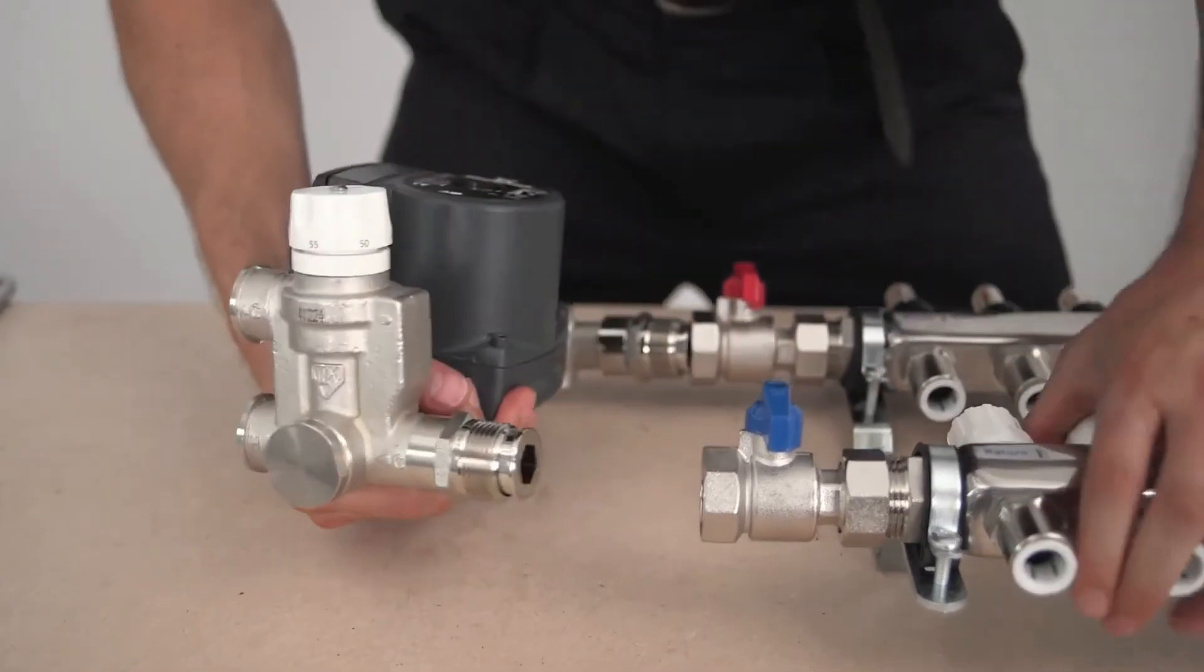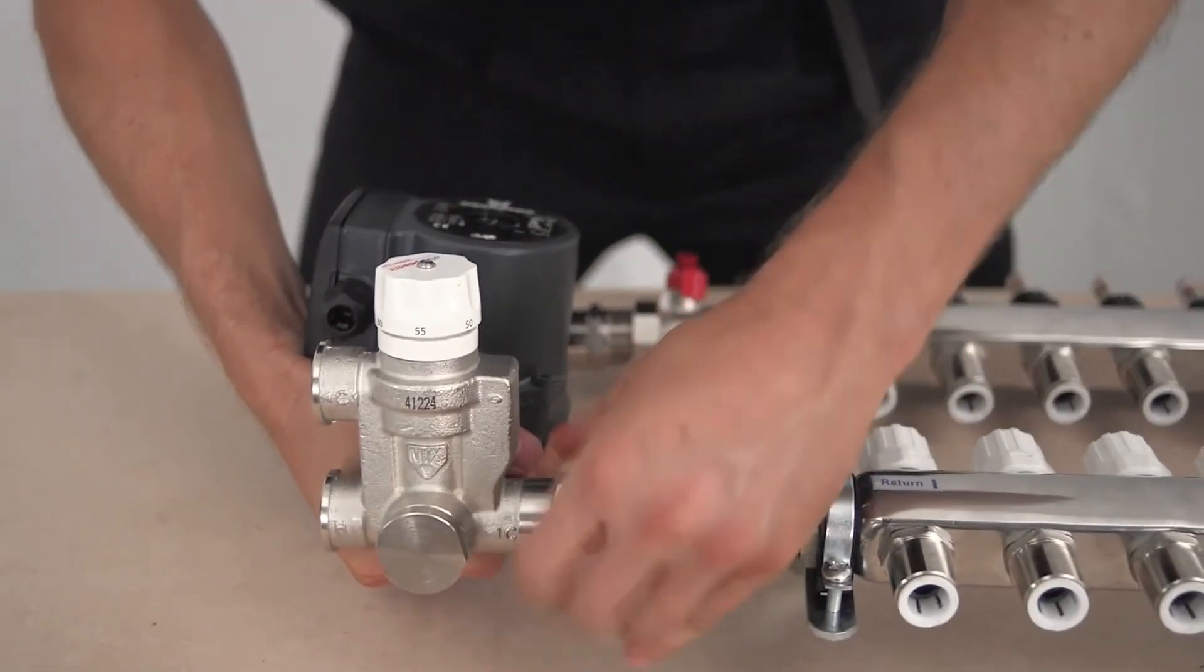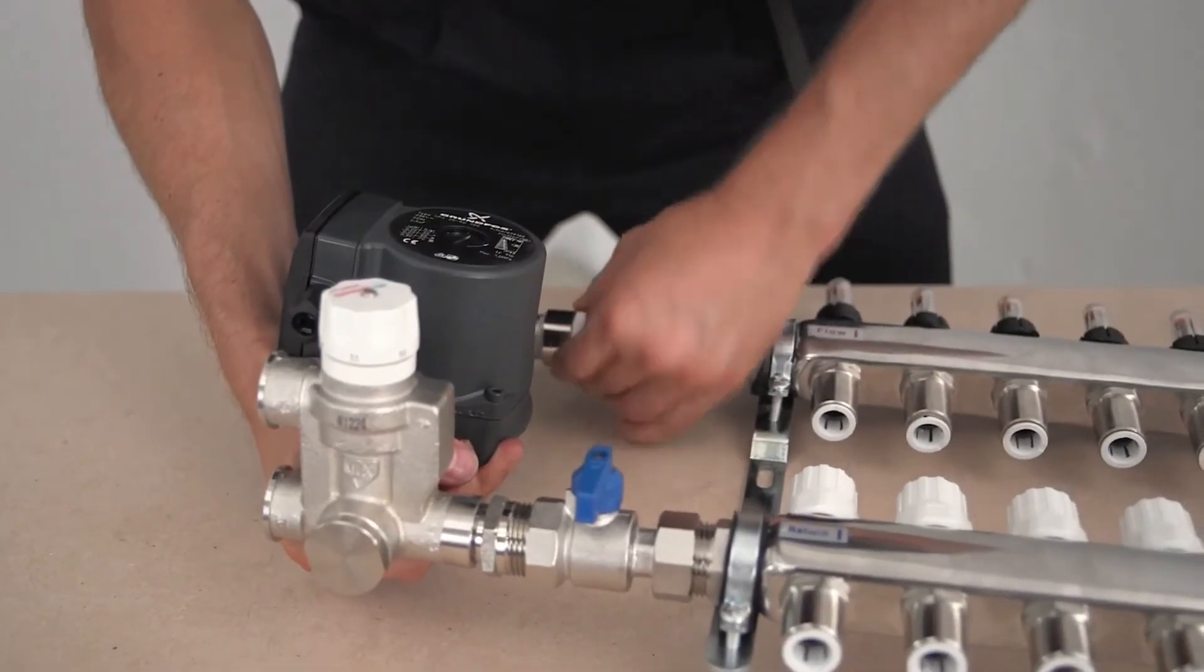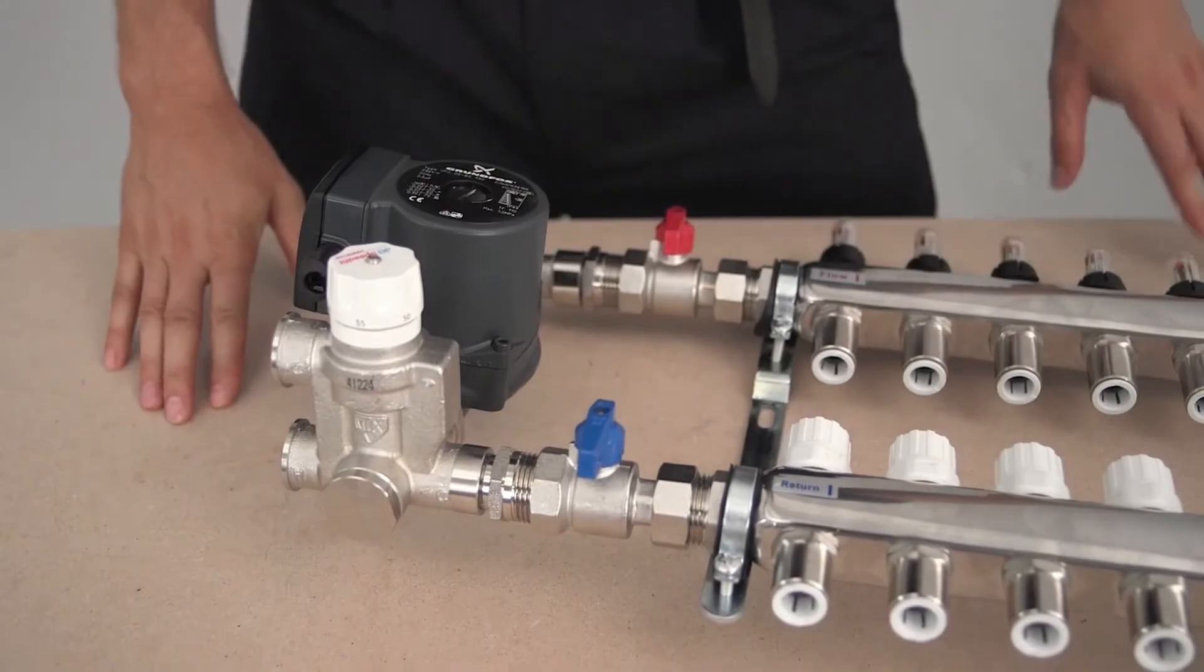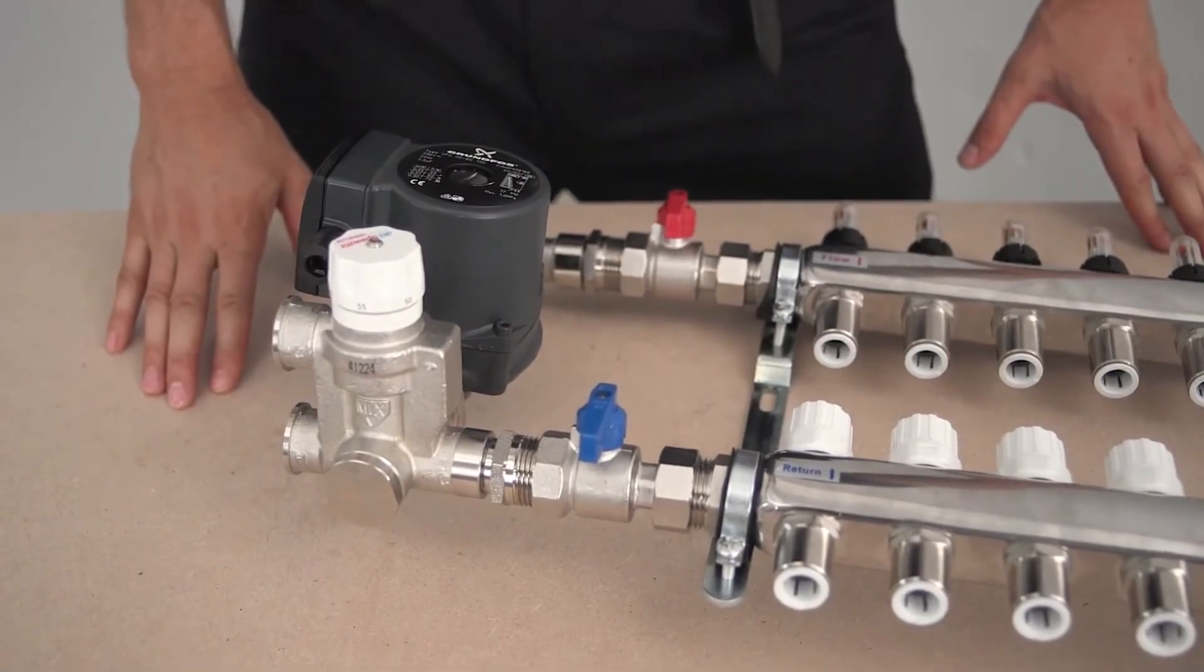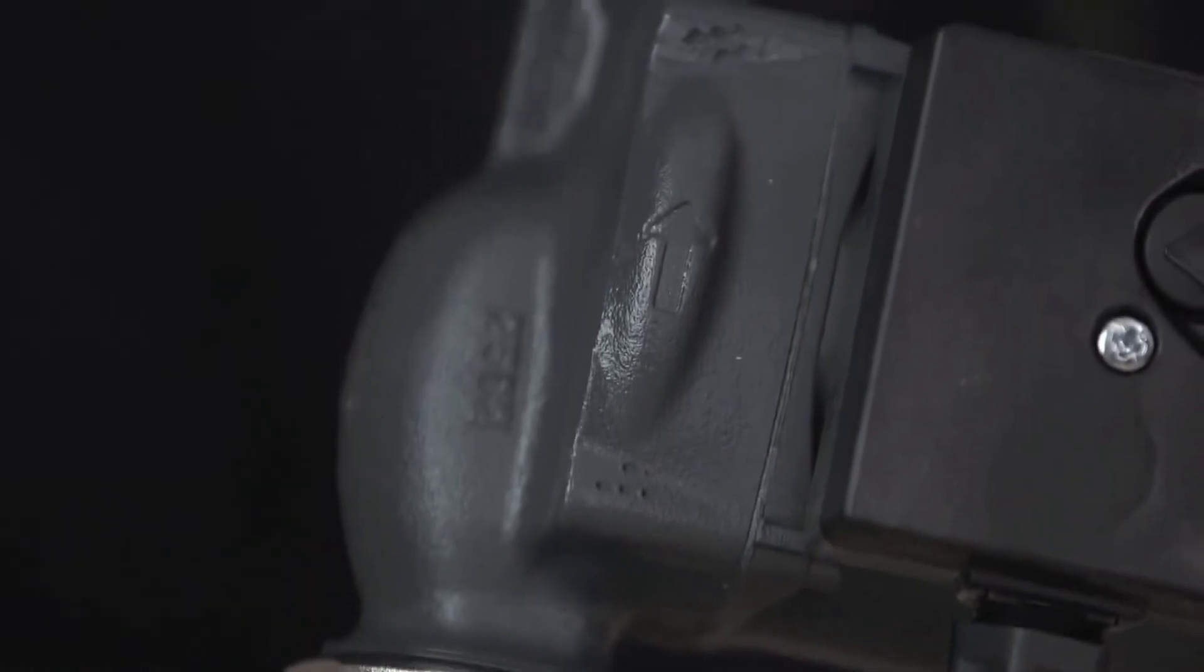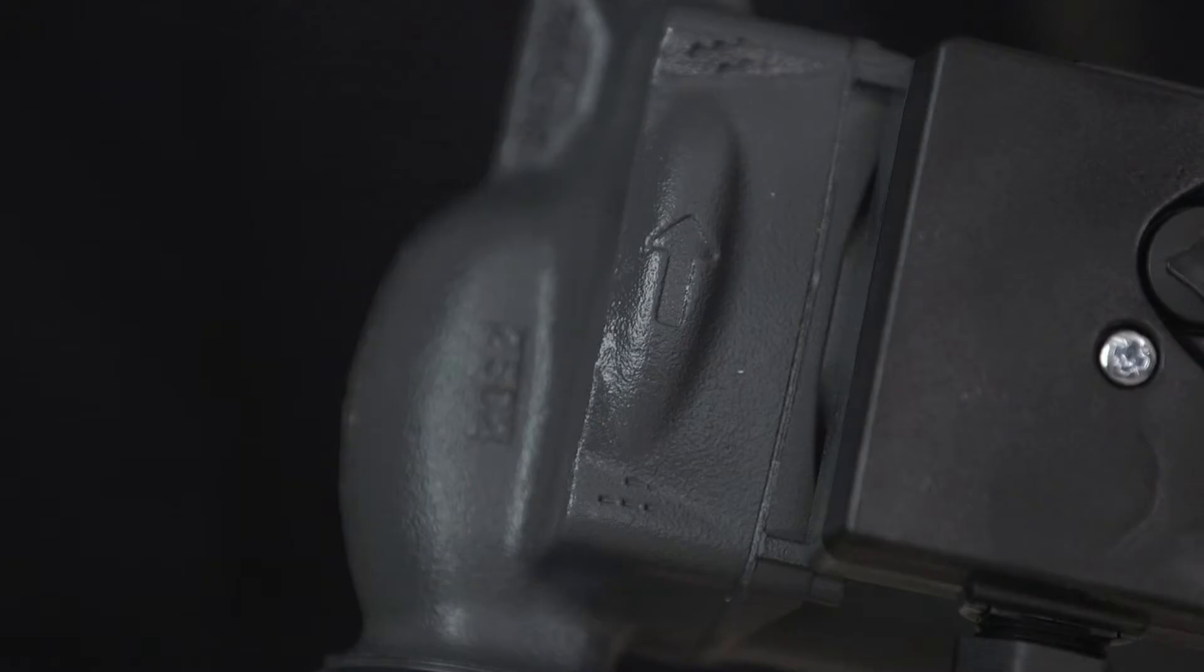The control pack is connected to the isolating valve on the manifold using the washers provided. It performs a number of functions. It blends high temperature water from the boiler with the water in the UFH system to maintain the designated temperature, usually between 40 and 60 degrees depending on the application. It also circulates water around the various UFH circuits. Be aware that this pump will not circulate to and from the boiler.